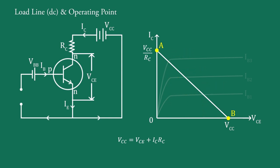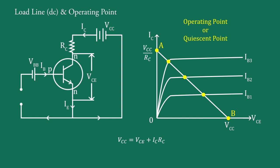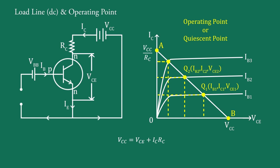The intersection of the DC load line with the base current curve is the operating point, or quiescent point, of the transistor. For zero signal, the values of IB, IC, and VCE are known as operating points — Q1(IB1, IC1, VCE1), Q2(IB2, IC2, VCE2), Q3(IB3, IC3, VCE3), and so on.